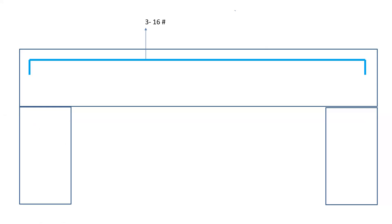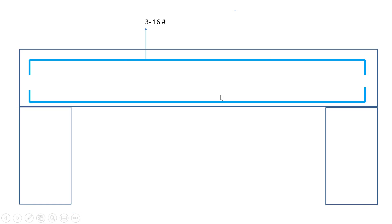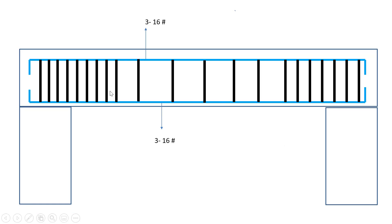On the top we are providing three bars of 16mm diameter. Since it is a longitudinal view, we see only one bar, but in the cross section we see three dots. In the same way, at the bottom I'm providing three bars of 16mm diameter. Near the support, stirrup spacing is 100mm center to center, and from the center onwards the spacing increases to 150mm center to center.